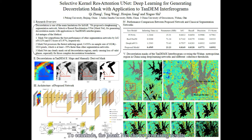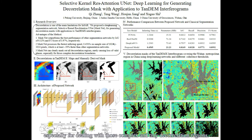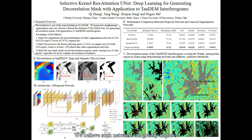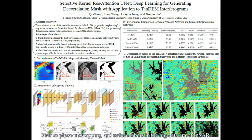To conclude, MaskNet shows promising results in effectively generating accurate masks, especially for dealing with complex and tiny decorrelation regions. We believe such networks can greatly improve the reliability of following InSAR procedures, such as phase unwrapping, and reduce labors in the big data era of InSAR.